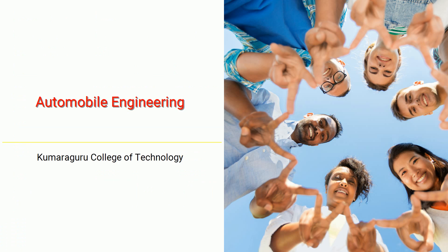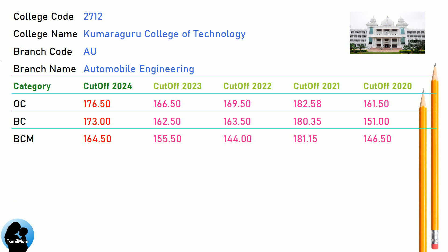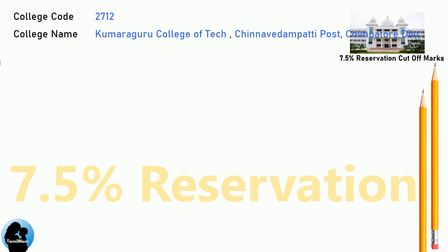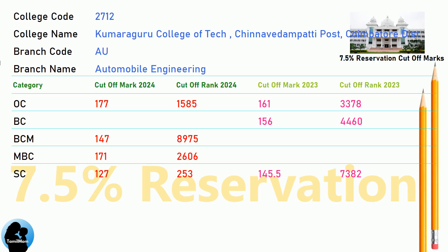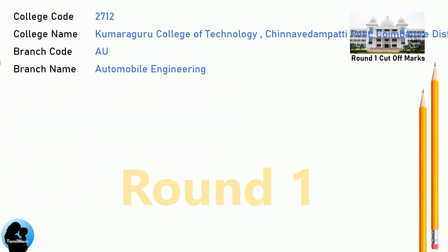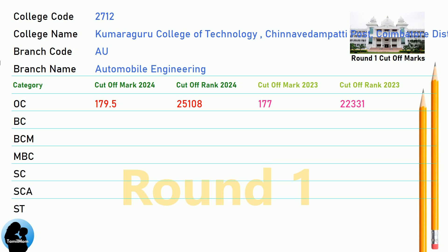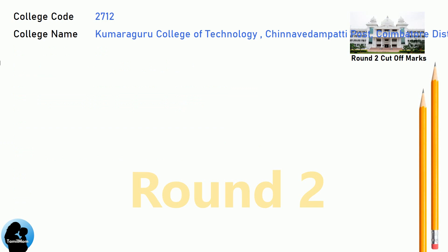DNA cutoff for Kumaraguru College of Technology in Automobile Engineering. DNA 7.5 Reservation cutoff for Kumaraguru College of Technology in Automobile Engineering. DNA Round 2 cutoff for Kumaraguru College of Technology in Automobile Engineering.